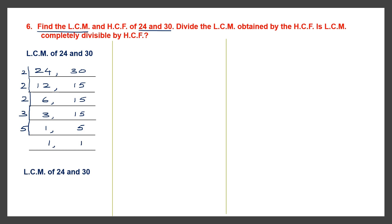Now we find the LCM of 24 and 30 by multiplying all these. There are three 2s: 2 into 2 into 2. Then we have a 3 and a 5. Let's multiply: 2 twos are 4, 4 twos are 8. So 8 into 15 is 120. So we have found the LCM — the LCM is 120.